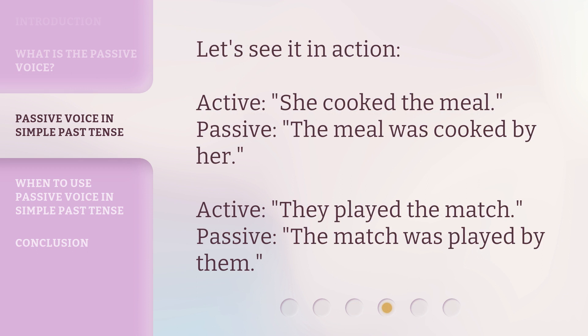Let's see it in action. Active: 'She cooked the meal.' Passive: 'The meal was cooked by her.' Active: 'They played the match.' Passive: 'The match was played by them.'